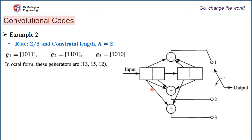In the next video lecture, we will understand convolution codes in greater depth and explore different forms of representing the convolution code structure. This ends with a basic understanding of convolution encoders and how they produce output bits for sets of incoming information bits. Thank you.